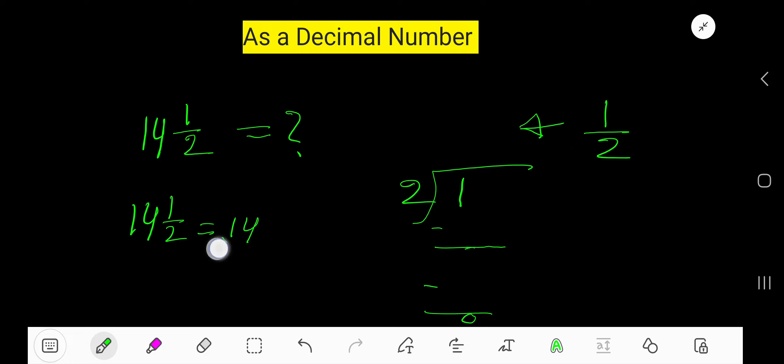Here, the fractional part is one half. Divide one by two. Two goes into one how many times? Zero times, as one is less than two. Zero times two is zero. If you subtract, you are getting one.